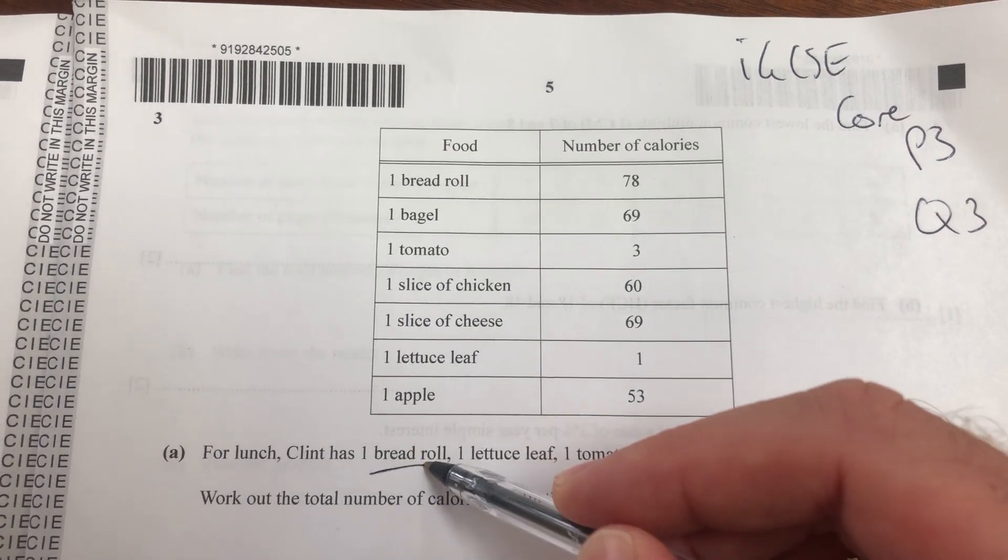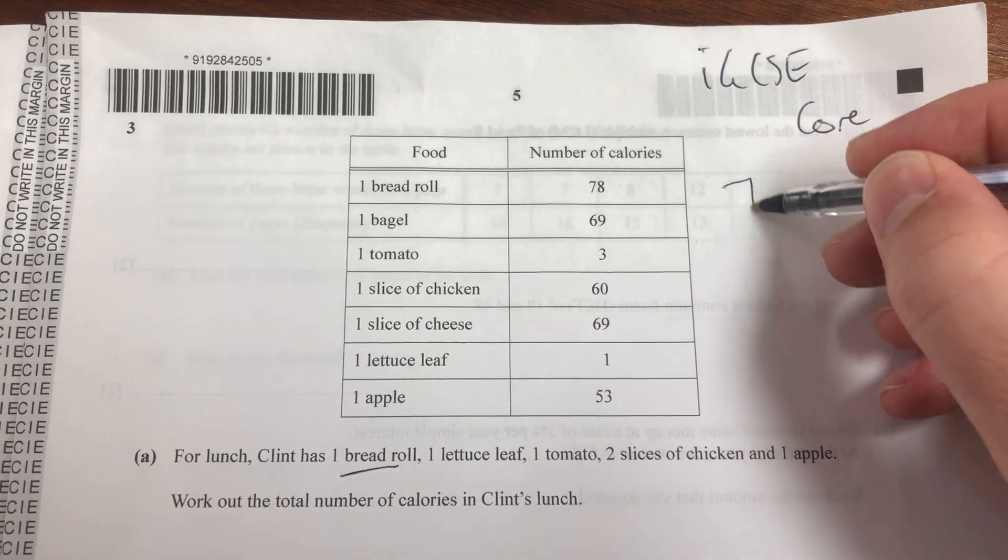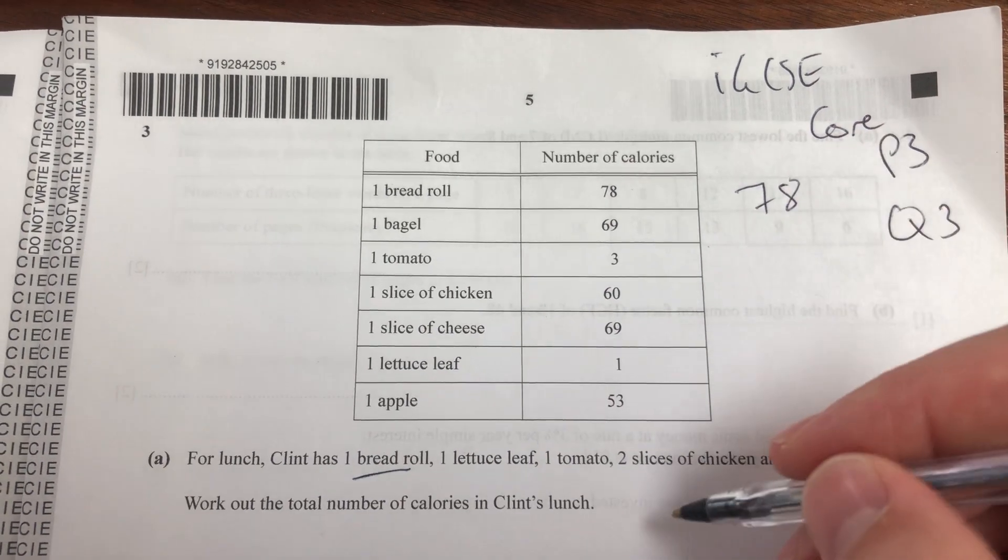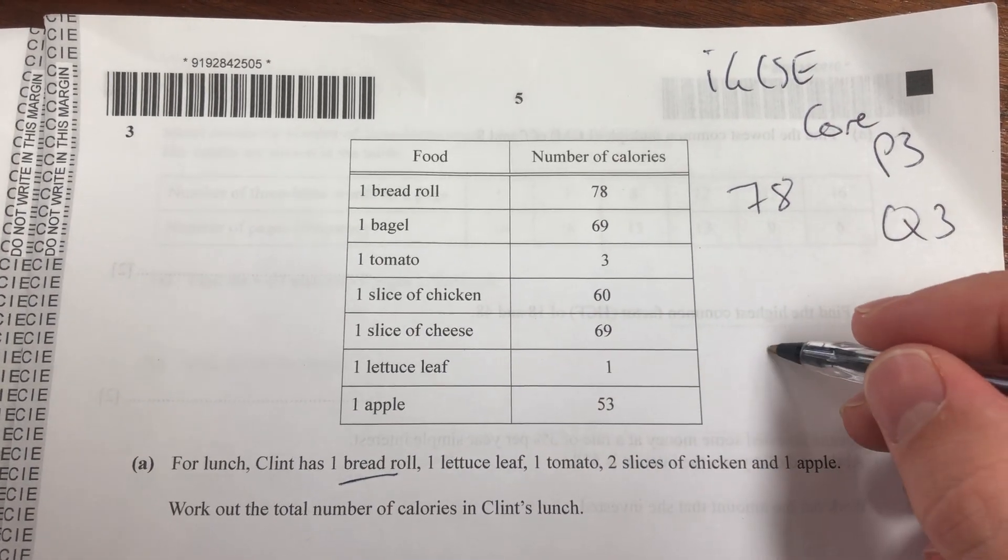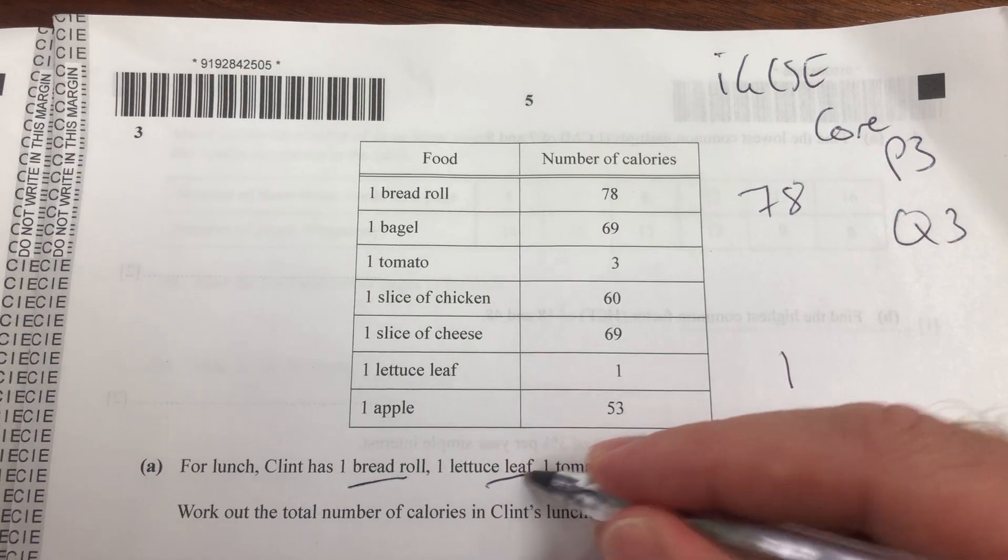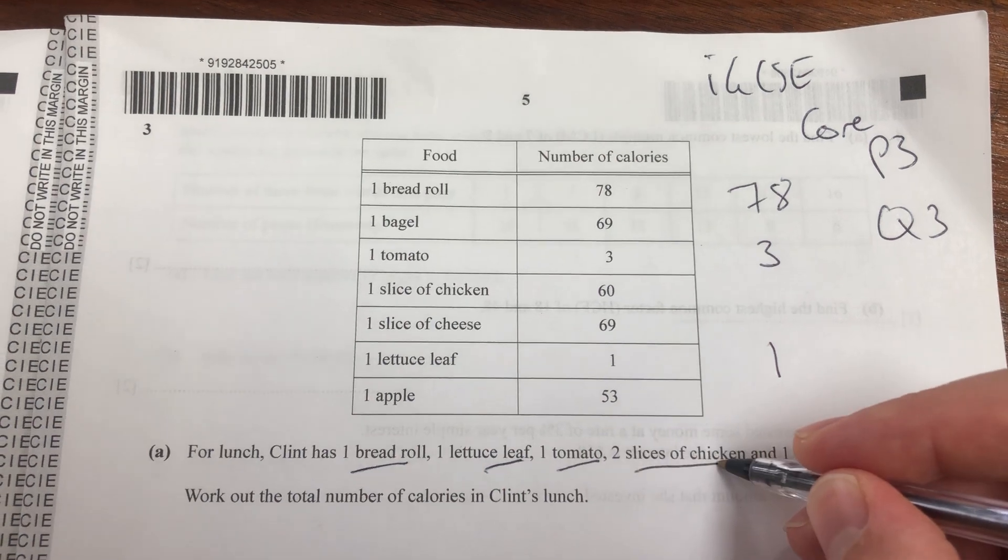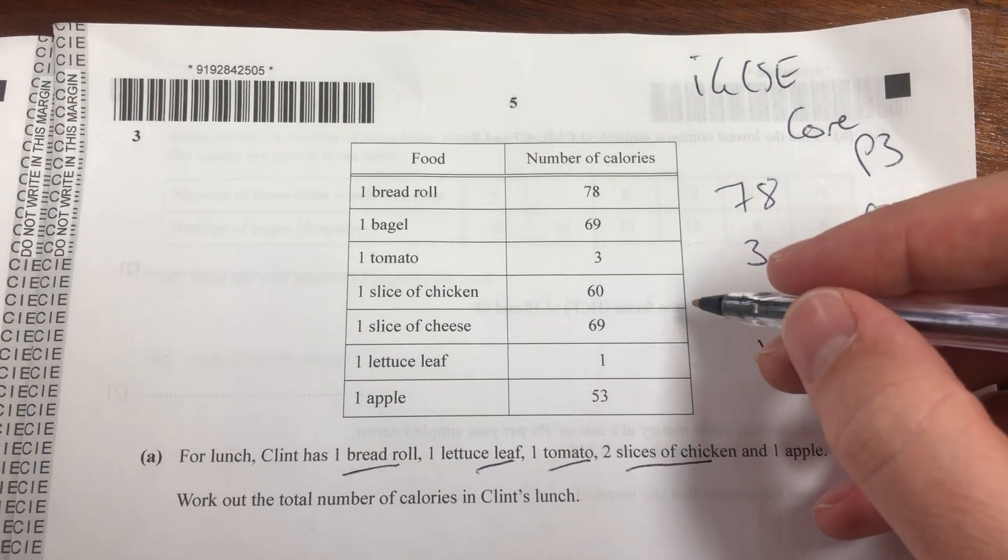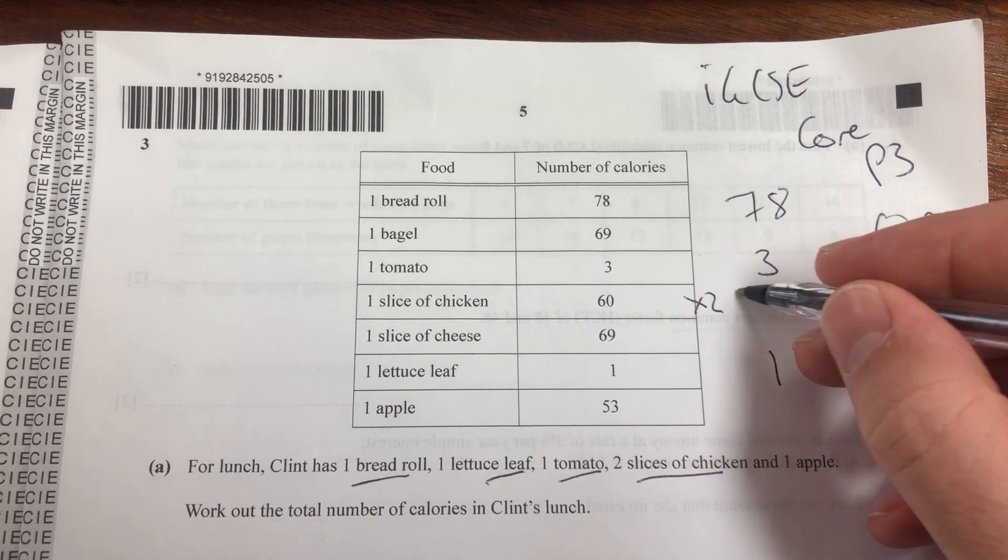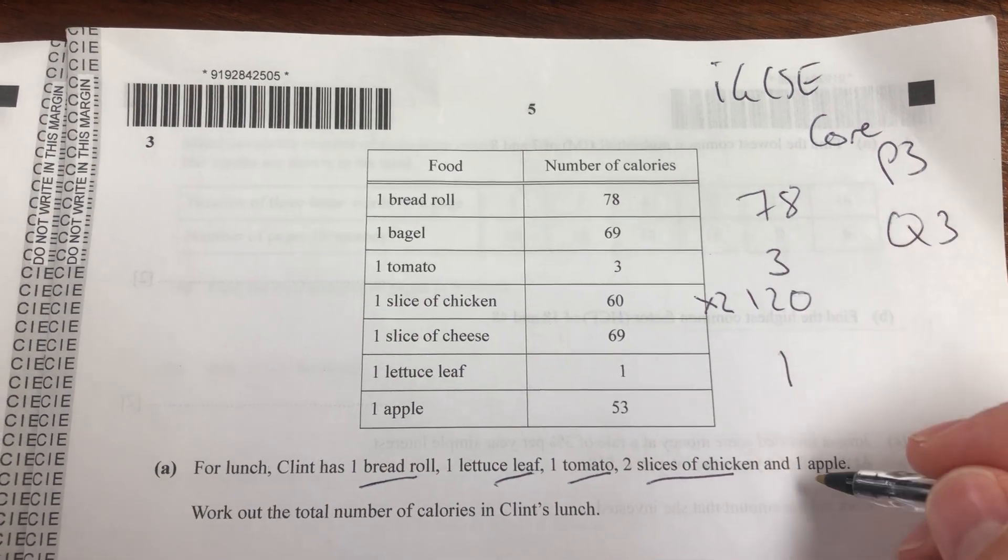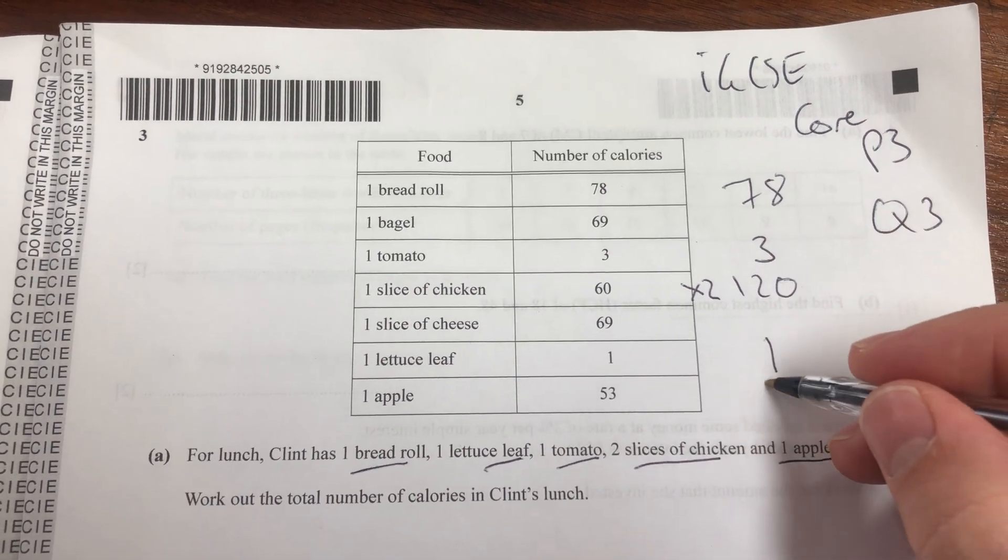So he has one bread roll, so he has 78, he has one lettuce leaf, one, one tomato, three, two slices of chicken, so that's times two there, that's 120, and one apple, 53.